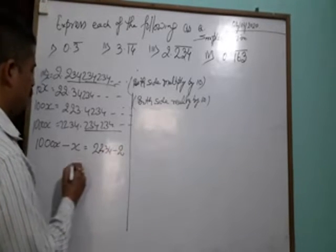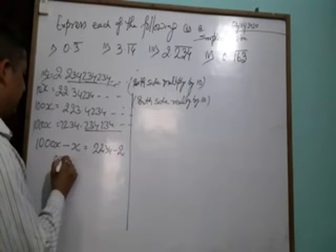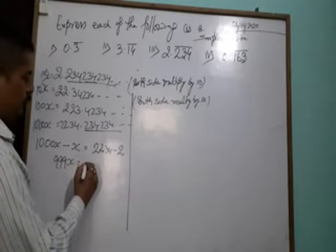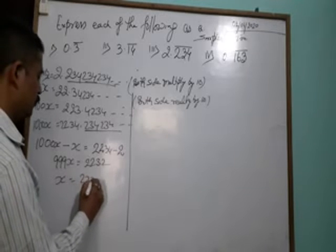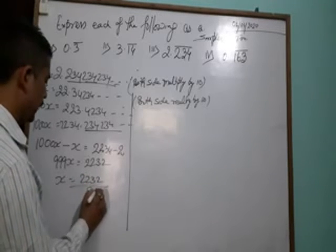We subtract 1000X minus X equals 2234 minus 2. So 999X equals 2232, so X equals 2232 by 999.